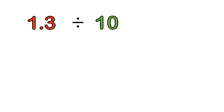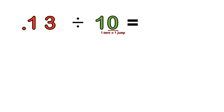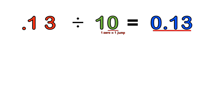What if we had 1.3 divided by 10? In this case we already have a decimal, so we don't need to introduce one. We move on to step two: one zero equals one jump to the left. We move the decimal point one place to the left, and it becomes 0.13. So 1.3 divided by 10 equals 0.13.